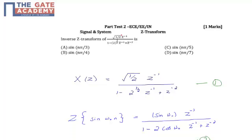square root of 1/2 times Z^(-1) divided by 1 minus square root of 2 Z^(-1) plus Z^(-2). The options are: A is sin(nπ/3),